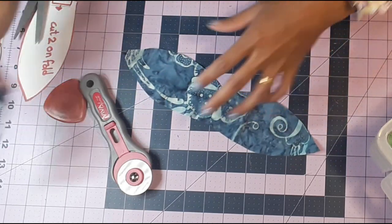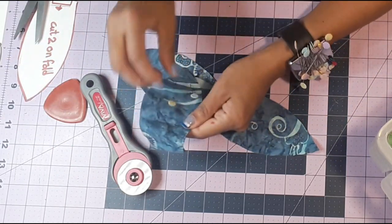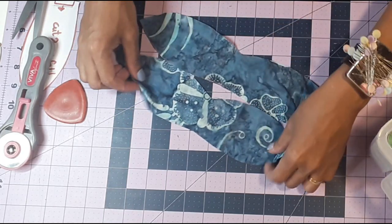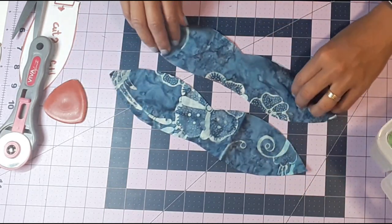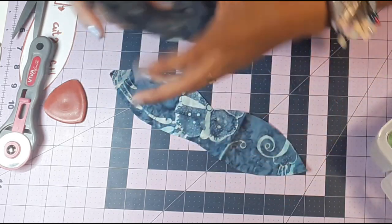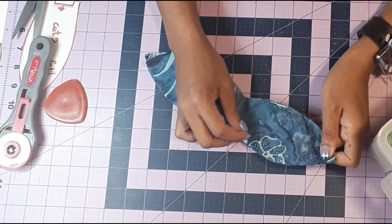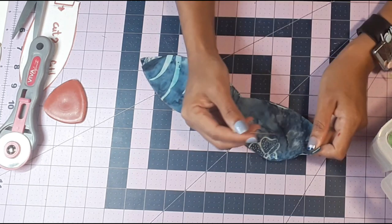Now we're going to put the right sides together. Make sure you align them right because there is one side that's not the same as the other side. Now we're going to stitch all around, leaving a gap opening in the center.